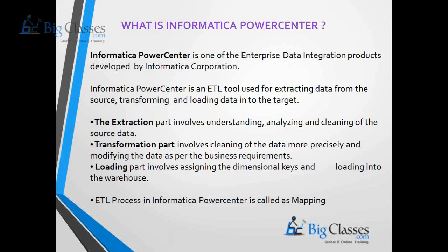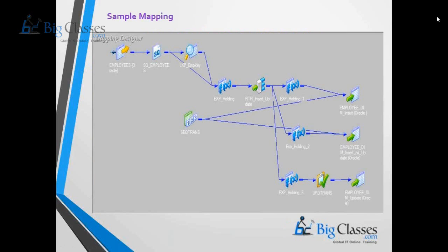As an ETL developer or Informatica developer, we are going to design the plan of the ETL process, which is called a mapping in Informatica PowerCenter terminology. A mapping means you have a source present in the OLTP application and a target present in the data warehouse. You design the ETL plan to extract data from the source table and load it into the target table, with many transformations in between the source and target that perform different operations in order to transform the data.